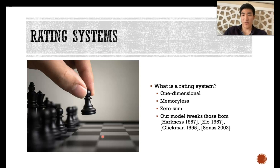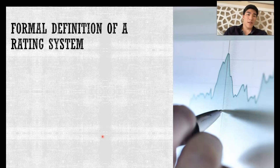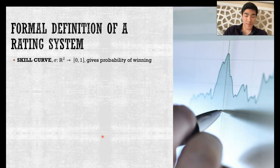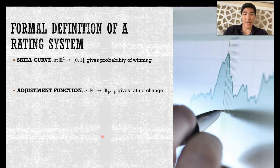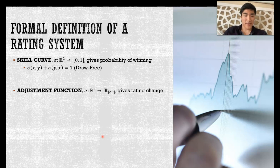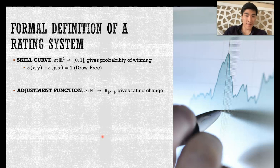These specifications of our model are tweaks and generalizations of previous rating systems discussed in the resources below. Formally speaking, we say a rating system must have a scale curve, which gives the probability of winning for a player with a rating of the first input against a player with a rating of the second input, and an adjustment function, which gives the amount of rating gained from a match by a player with a rating of the first input if they beat a player with a rating of the second input. We also require that the skill curve be draw-free, which means there is no possibility of draws. A lot of rating systems have this, like ELO, and they account for draws by basically saying it's a half win and a half loss — a pretty easy way to account for it mathematically.